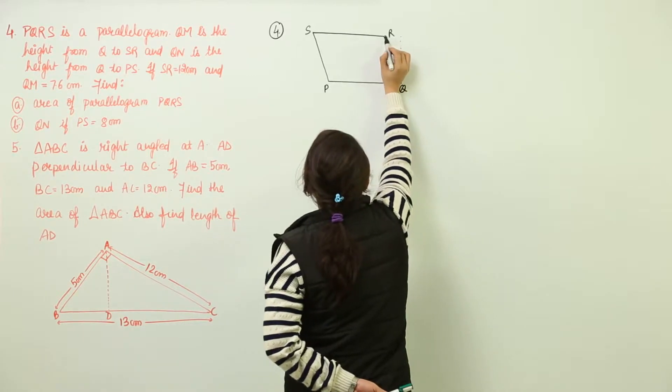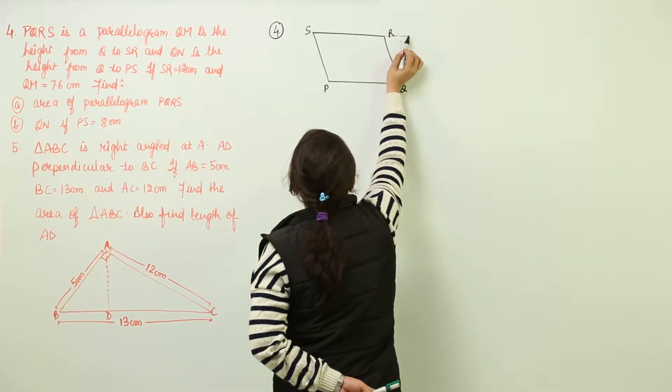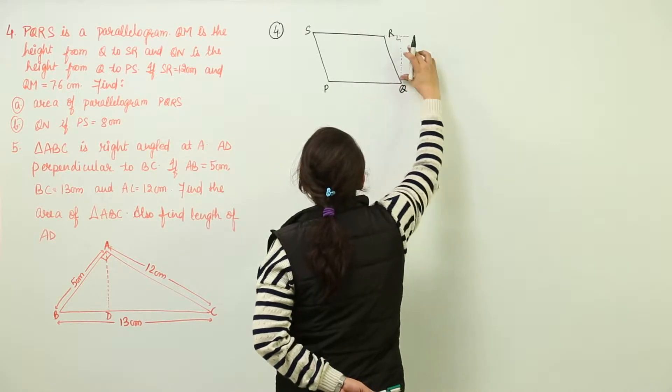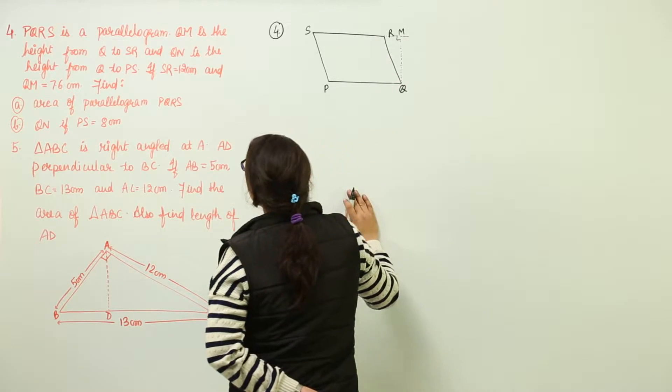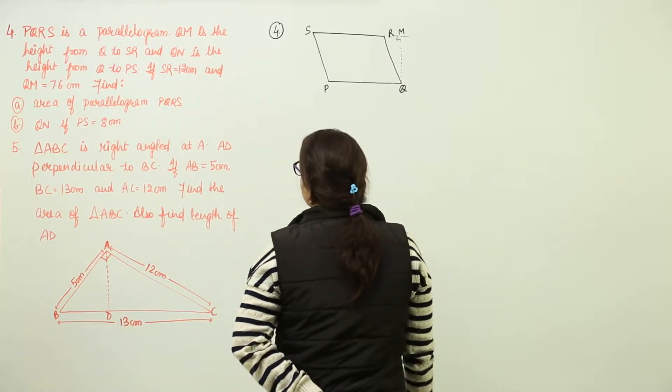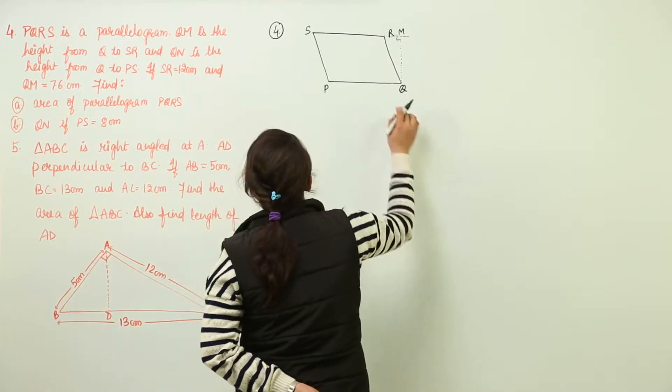That is the perpendicular. If you extend SR you will check that QM is going to be the height for SR. Next we have QN as the height from Q to PS.